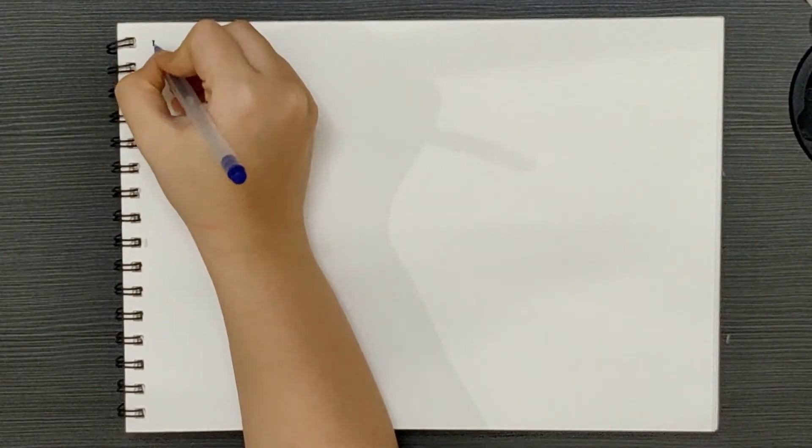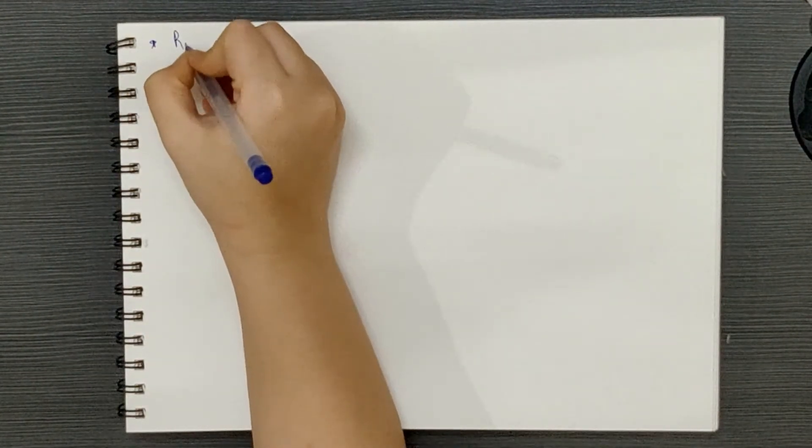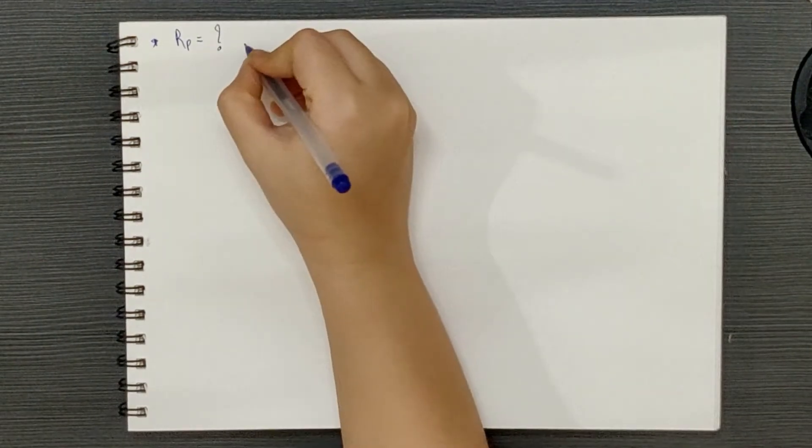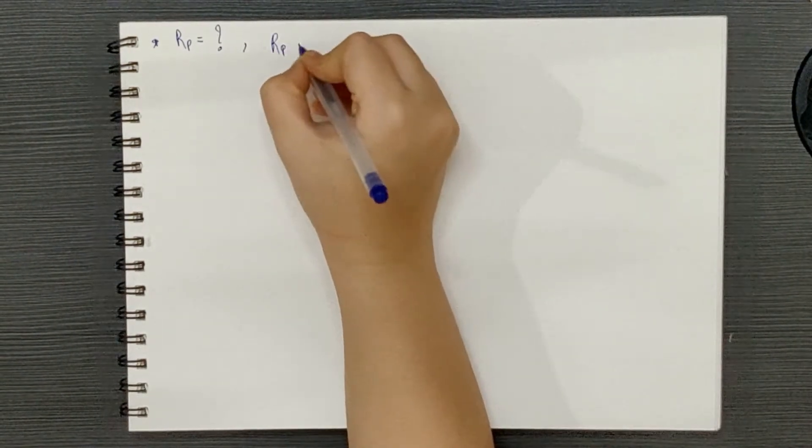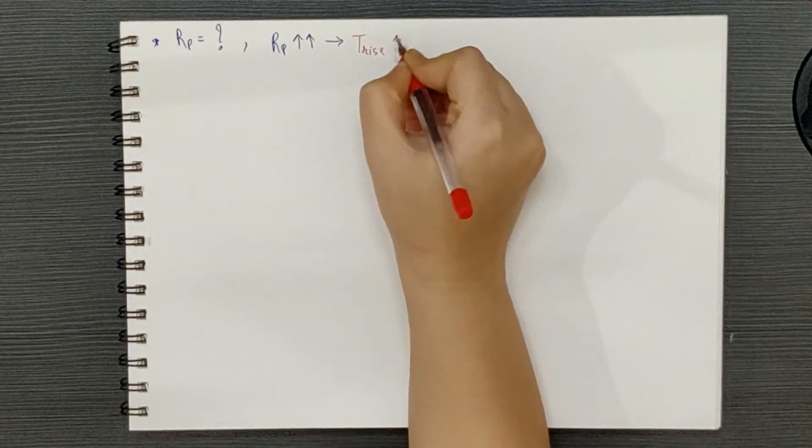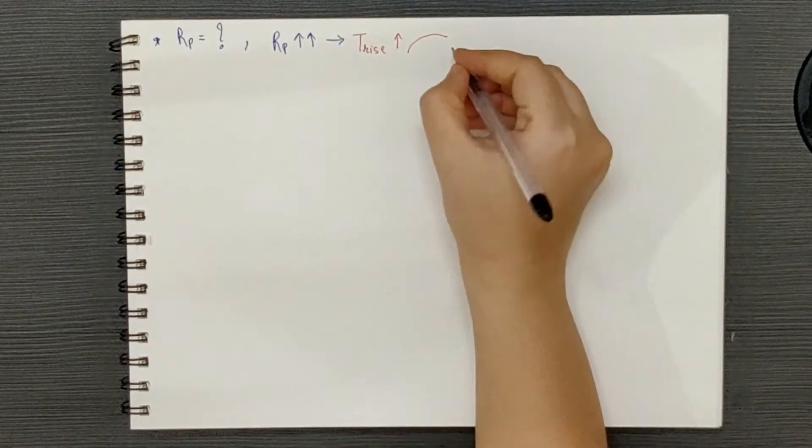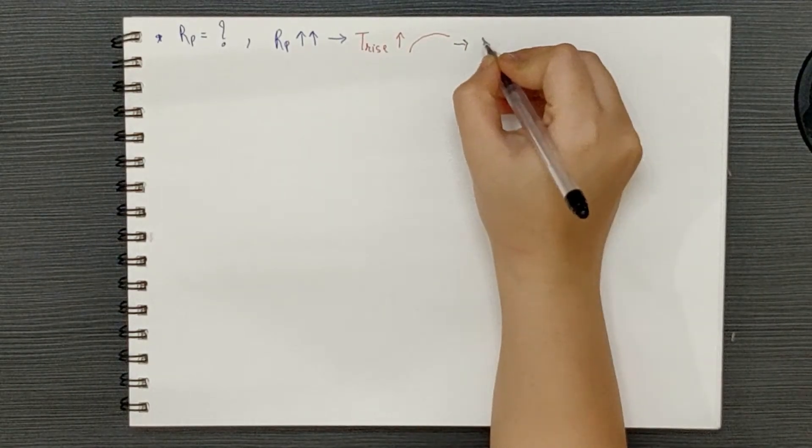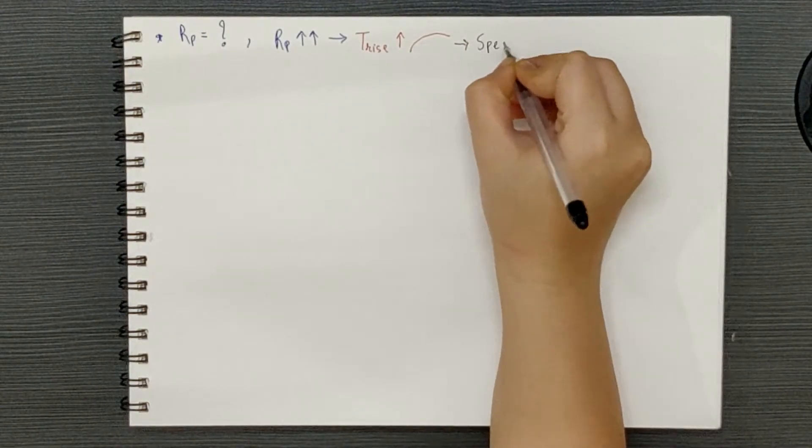Now, the most obvious question that will arise is how can we determine the value of the pull-up resistor? Now, a high value of pull-up resistor leads to an increase in the rise time which eventually imposes a limitation on the maximum attainable clock frequency. Ideally,